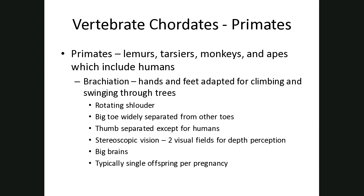Let's talk for just a second about primates. Primates are a group of chordates — so also mammals — that include lemurs, tarsiers, monkeys, and apes. Humans are categorized in the ape group. There's a term I want you to be familiar with: brachiation, which means the hands and feet are adapted for climbing and swinging through trees. Some anatomical examples that point to this are a rotating shoulder, a big toe widely separated from other toes, fingers, and a thumb separated from the other fingers — except not in humans. Primates also have stereoscopic vision, meaning two visual fields that overlap, which provides depth perception.